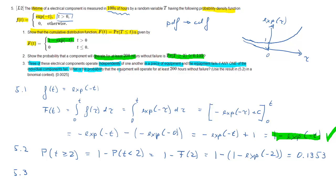So third part of the question: now we have some piece of equipment that uses three of these components, and they are used independently, and the equipment fails if any one of them fails.